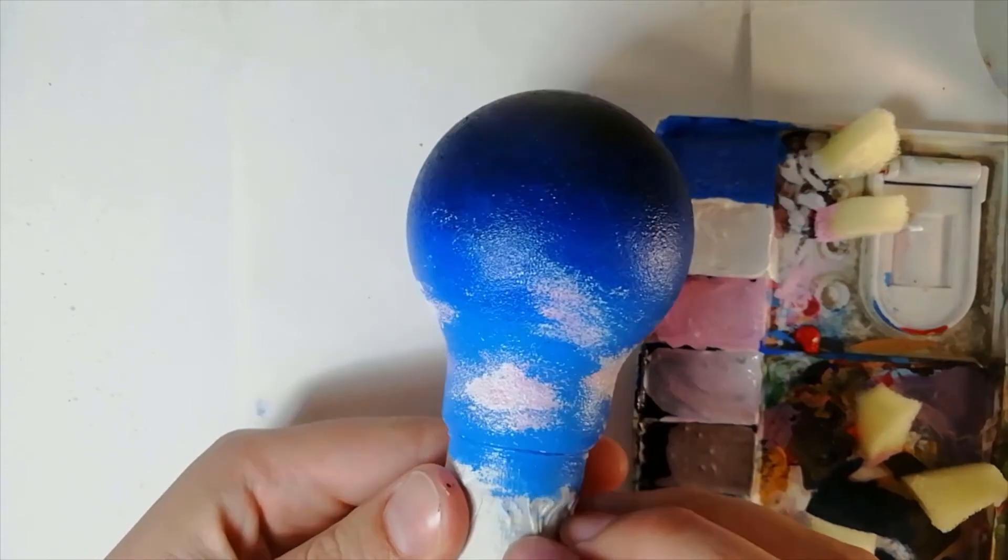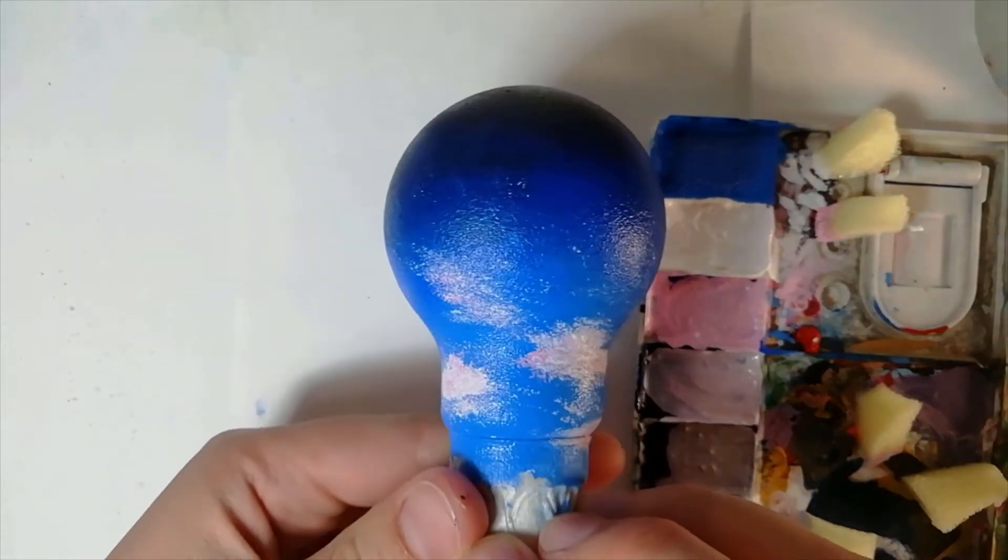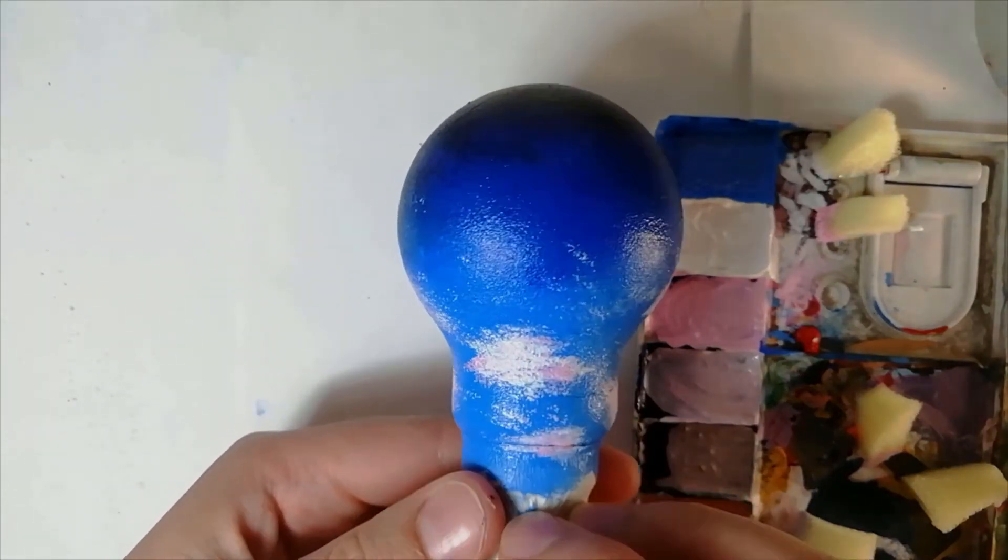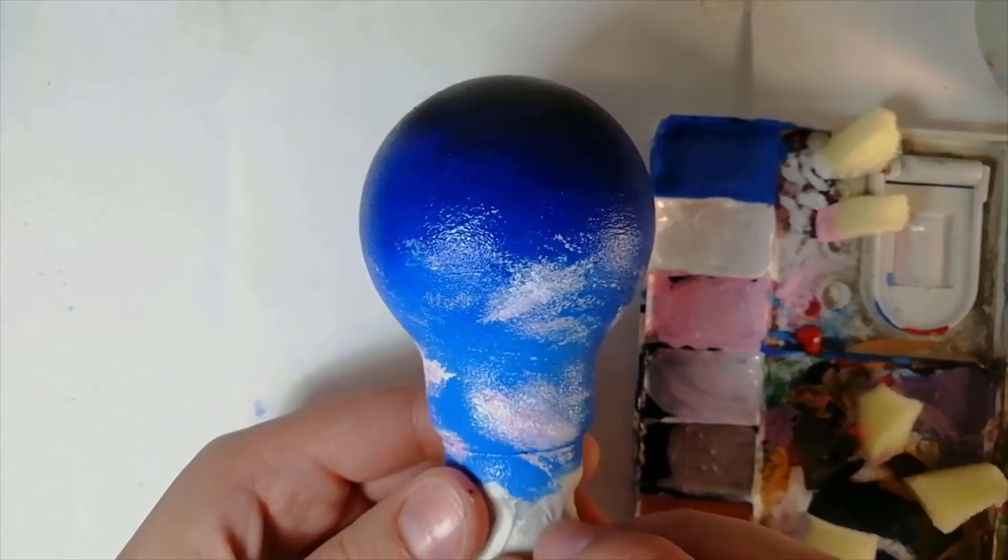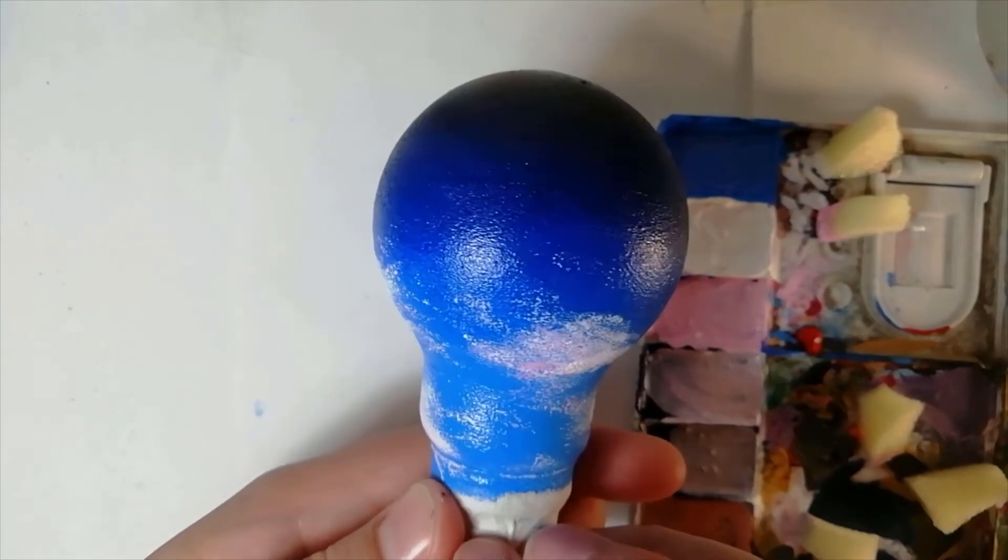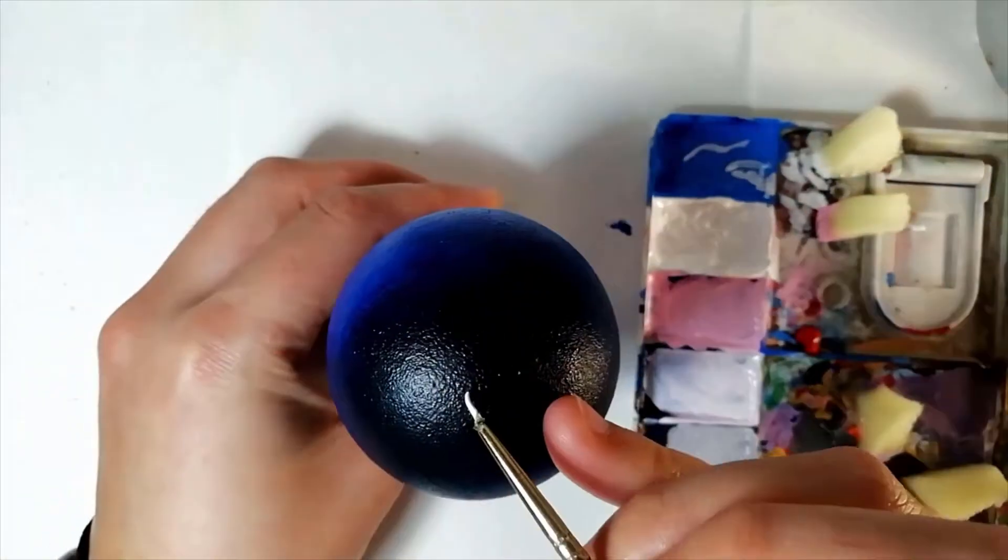After I'd finished painting the clouds, I decided to add some little stars to the top of the light bulb. I did this using my smallest paintbrush, and I also used my finger to smudge the paint a bit so it wasn't quite as bright white.